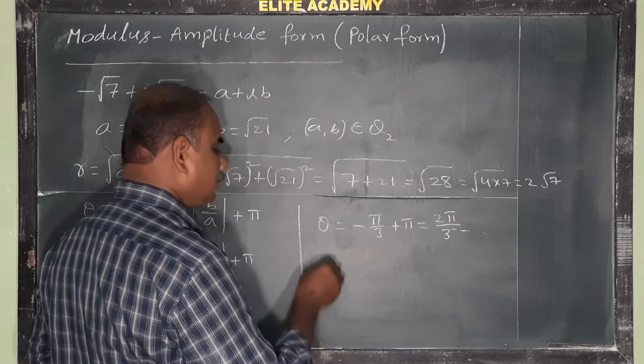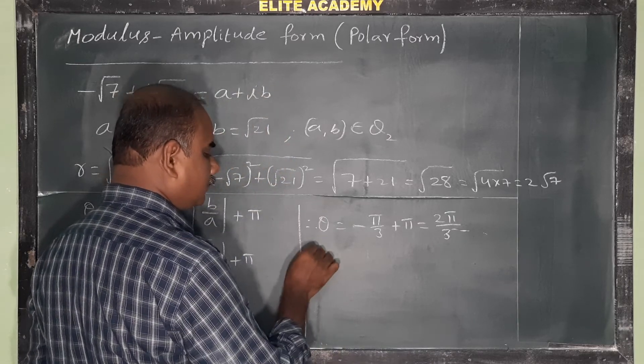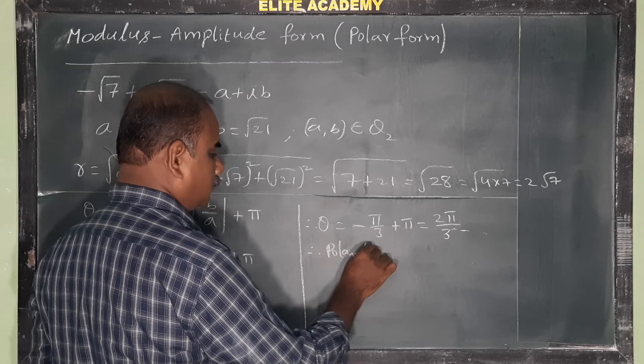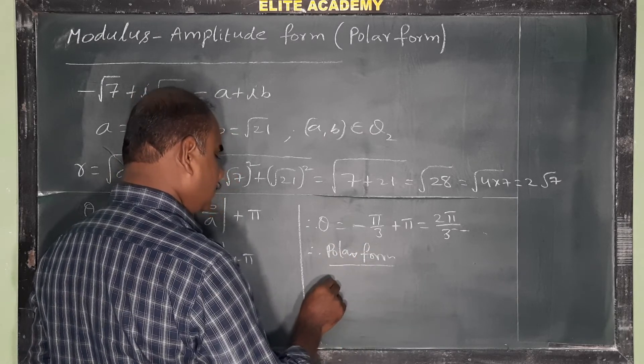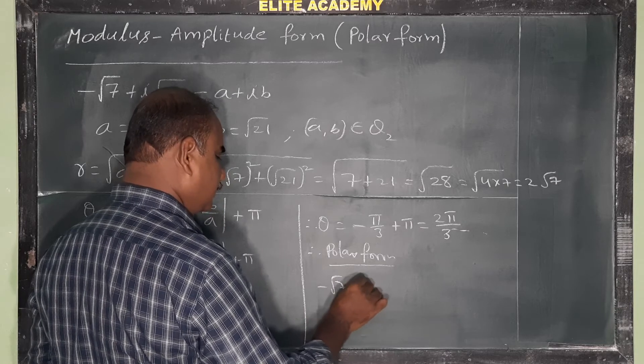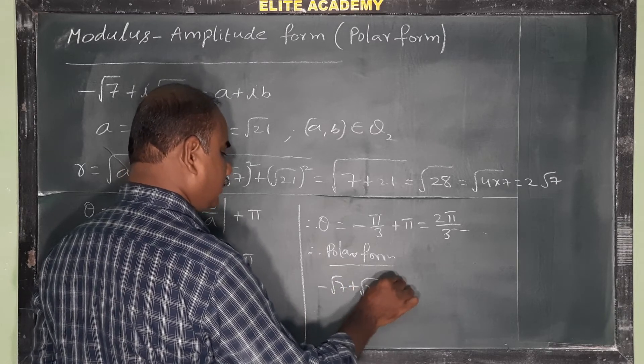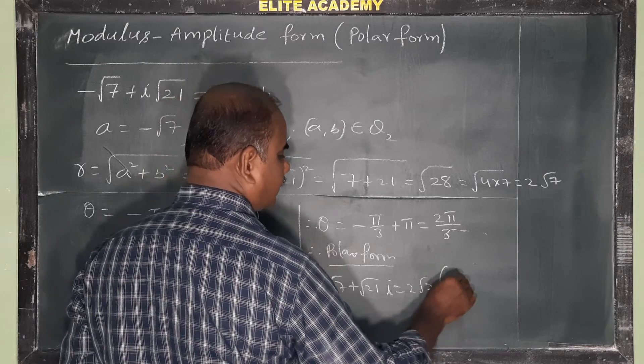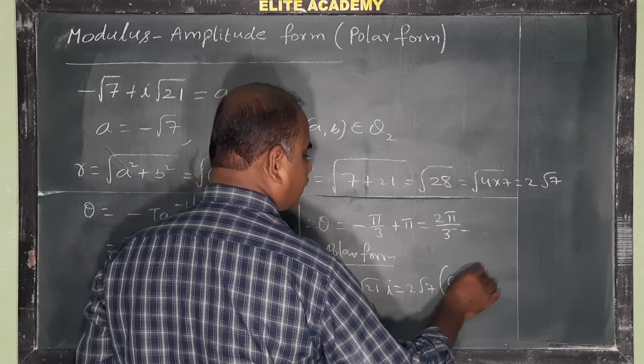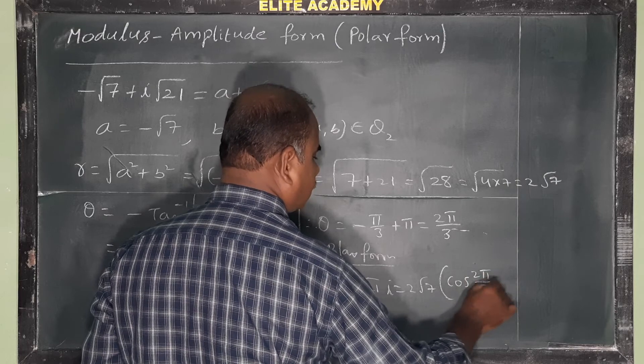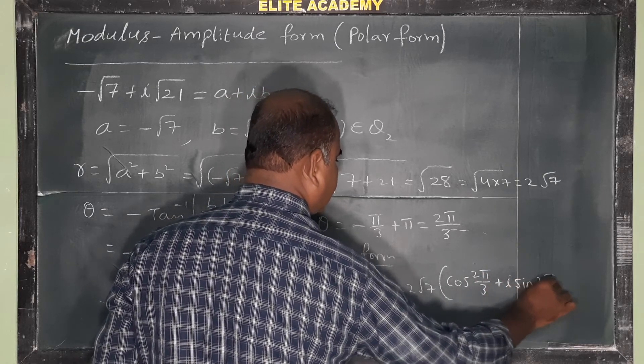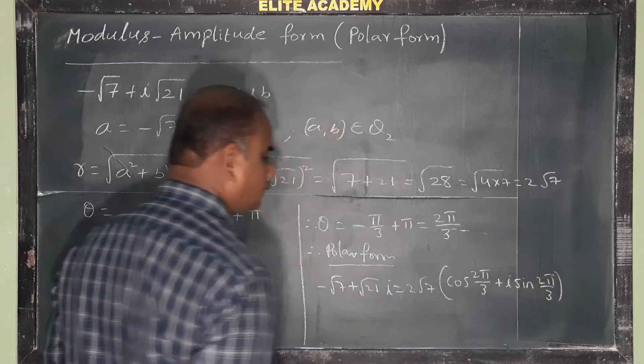Okay, this is amplitude. Therefore, polar form: minus root 7 plus root 21 i is equal to r, r means 2 root 7, cos theta, that means cos 2 pi by 3 plus i sin theta, sin 2 pi by 3. Okay.